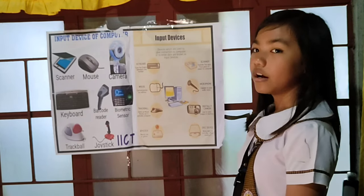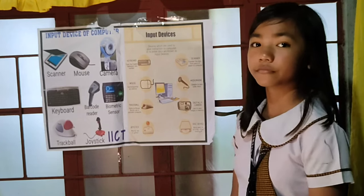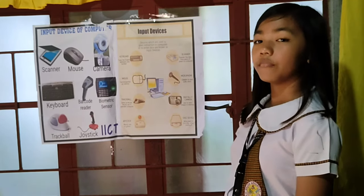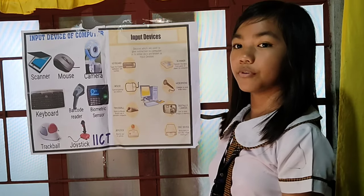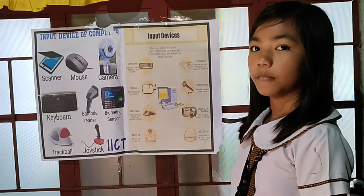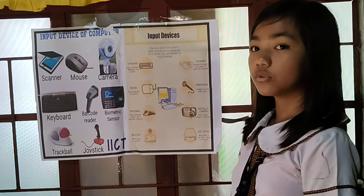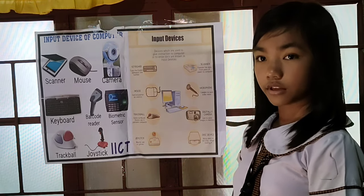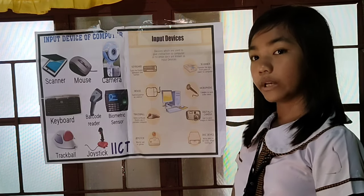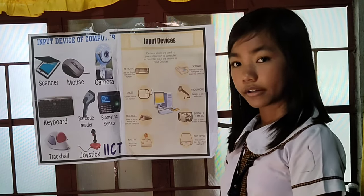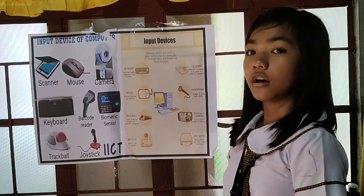Magnetic ink card reader, or MICR, is generally used in banks where there are large numbers of checks to be processed every day. Optical character reader is used to read printed text. Barcode reader is used to read bar codes. Optical mark reader is an optical scanner.